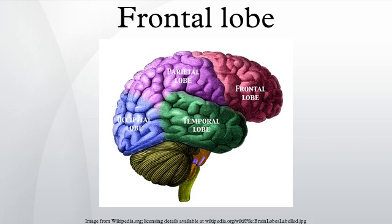It is separated from the parietal lobe by a space between tissues called the central sulcus, and from the temporal lobe by a deep fold called the lateral sulcus. The pre-central gyrus, forming the posterior border of the frontal lobe, contains the primary motor cortex, which controls voluntary movements of specific body parts.